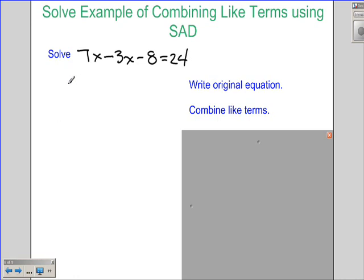The first thing that we want to do is always write our original problem, which is 7x minus 3x minus 8 equals 24. My step number one is going to be to combine like terms.